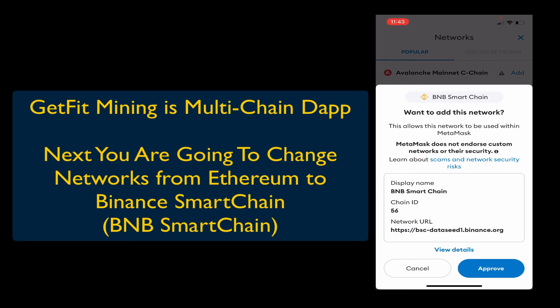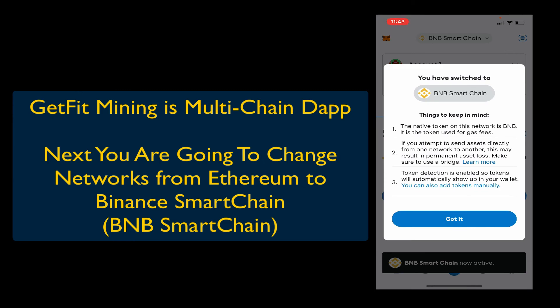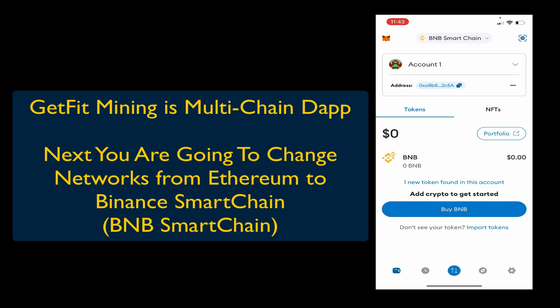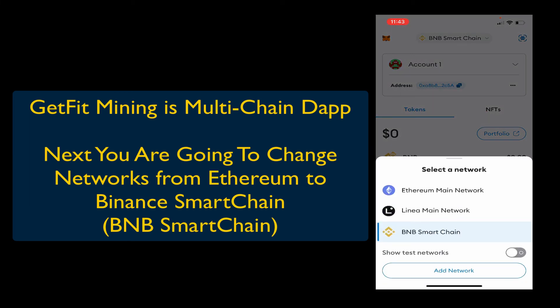It's going to ask you if you want to add this network — hit Approve — and then we're going to switch to network. Now you've switched to the BNB Smart Chain, hit 'Got It.' You'll see at the top that you're now on the BNB Smart Chain, and you can continue to add different chains as well as swap back and forth between them.